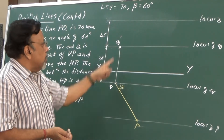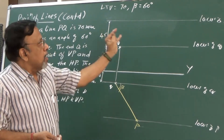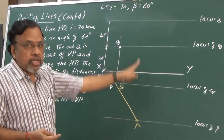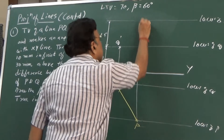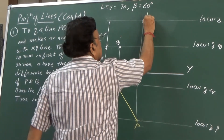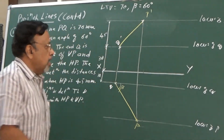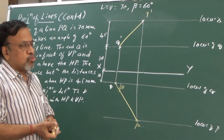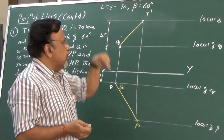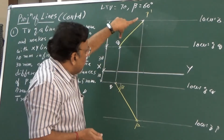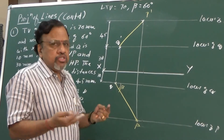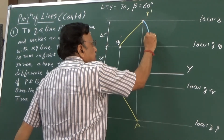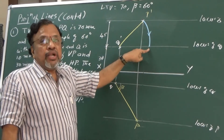To get the front view: projectors from Q to Q-dash and P to P-dash must lie on corresponding projectors. We already have the locus of P-dash. Draw a projector through P — this gives point P-dash — and joining them gives the final front view. Now we need to find the true length and true inclinations. To determine true length, we make the line parallel in one view to find its true length in the other view.